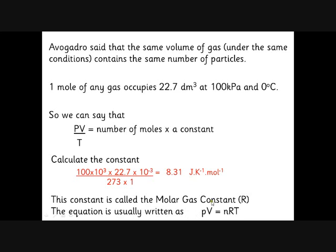The equation is usually written as pV equals n, where n is the number of moles, times R the gas constant, times the temperature. So now we can not only relate the conditions of one gas that's changing conditions, but we can actually work out any of those things given that we know the number of moles of gas involved.